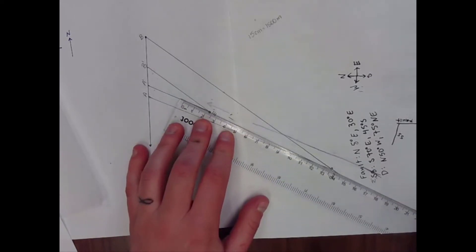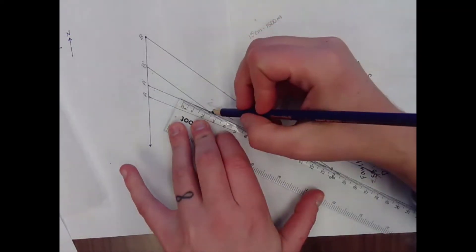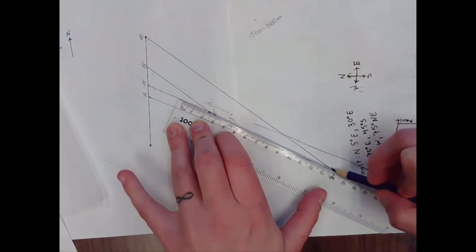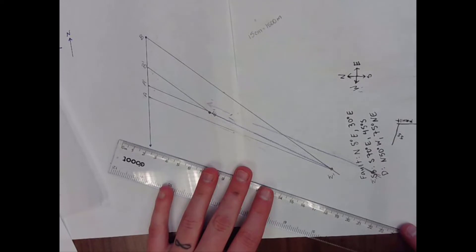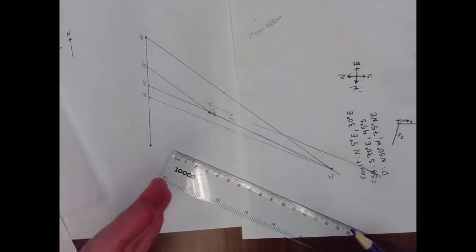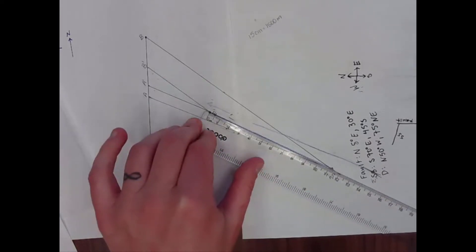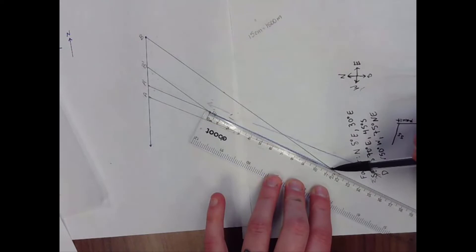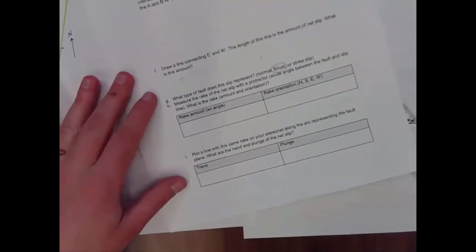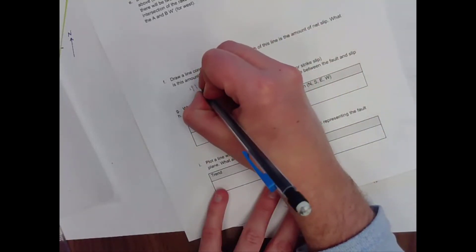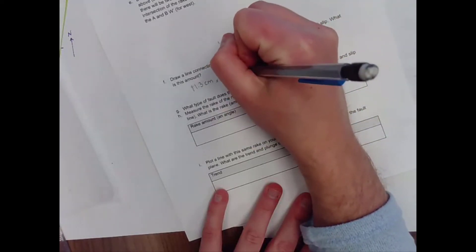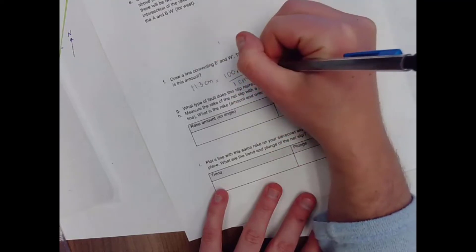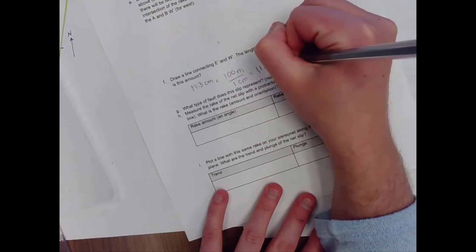If I connect E prime and W prime, that is going to be the slip amount associated with my fault. Because that is the difference between the piercing point or the matching point on the east side and the west side. Put zero there. I can measure this with the same scale as what I drew with because I drew everything here to scale. So here I have 11, 11.1, 11.2, 11.3 centimeters. So the length of the line is 11.3 centimeters. But I made sure that every one centimeter was 100 meters. So that's 1130 meters of slip. That's a lot of slip.